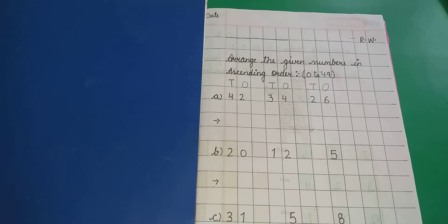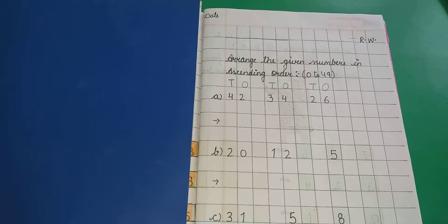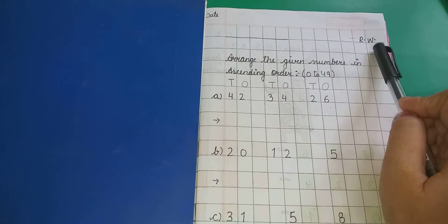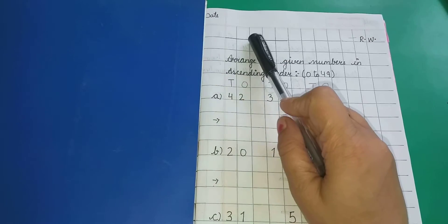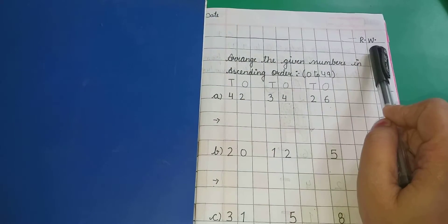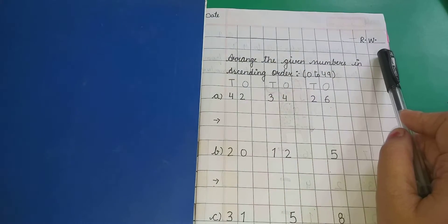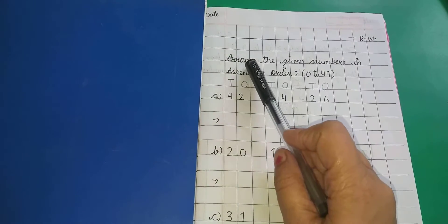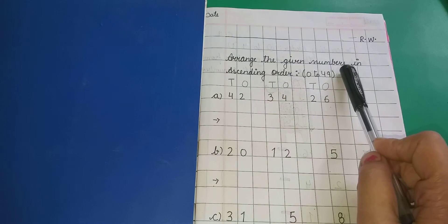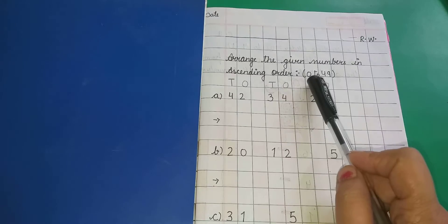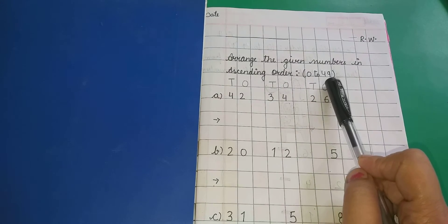Jai Hind kids, welcome to maths class. In today's class we are going to do revision work. Before that, do mention today's date and day R.W. Leave one line and mention the heading: arrange the given numbers in ascending order, 0 to 49.